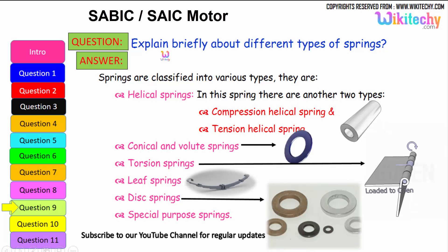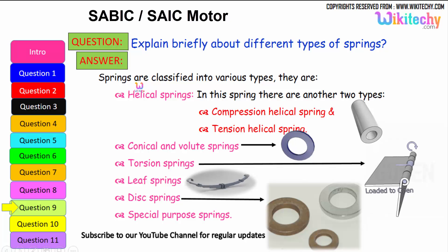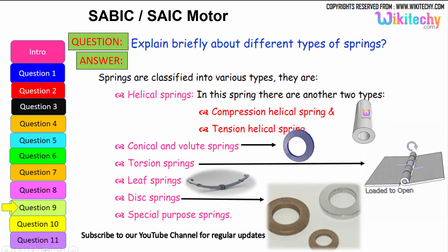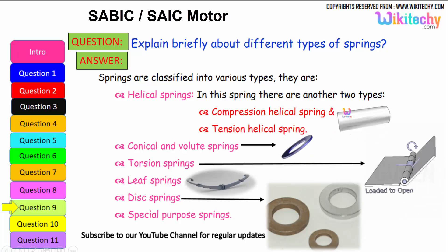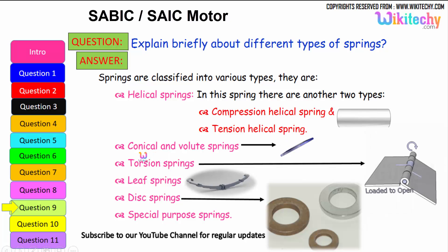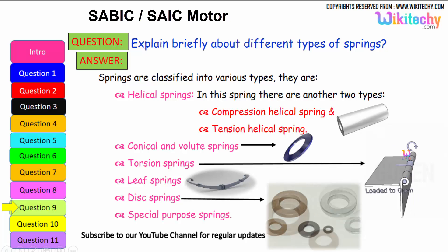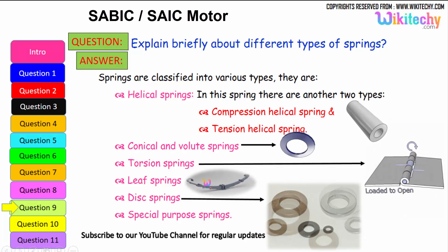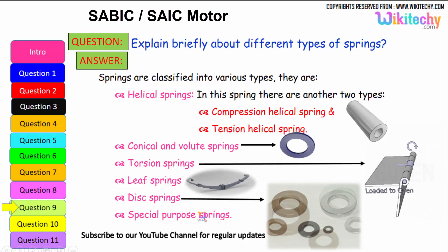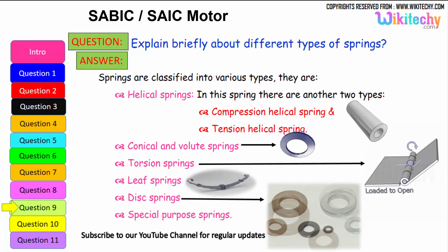Now let us see briefly the different types of springs. Springs are classified into various types. The first is helical springs, which have two sub-types: compression helical springs and tension helical springs. The next type is conical volume springs, followed by torsion springs, leaf springs, and disk springs. There are also additional special purpose springs. These are the different types of springs available.